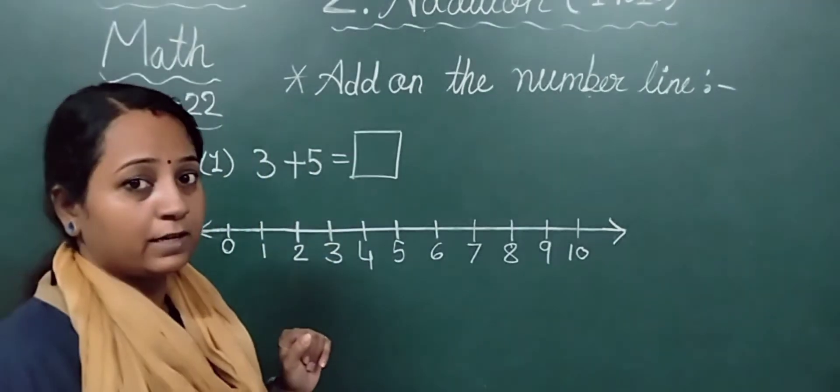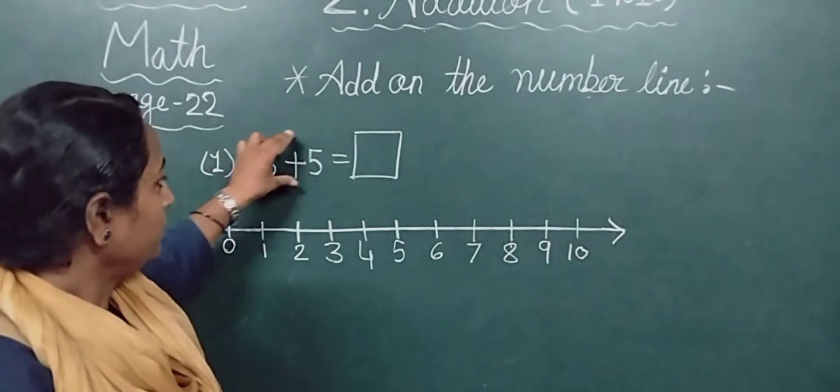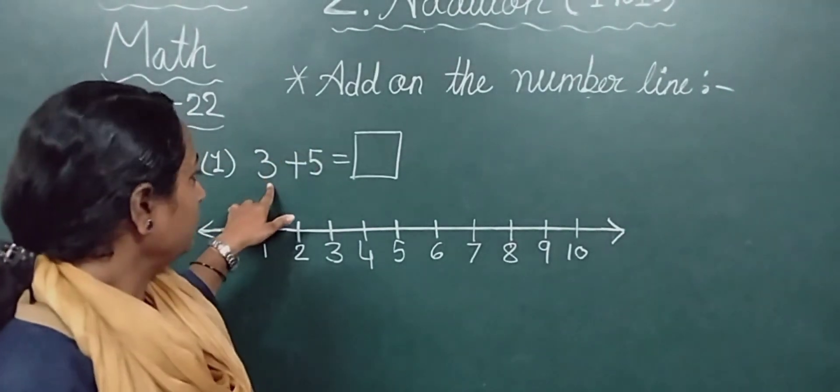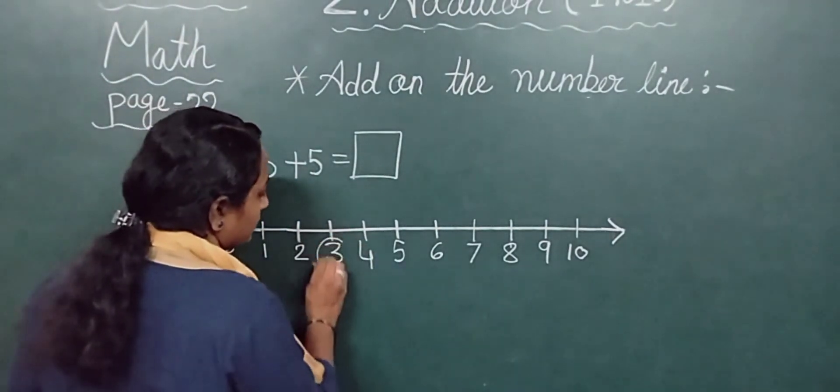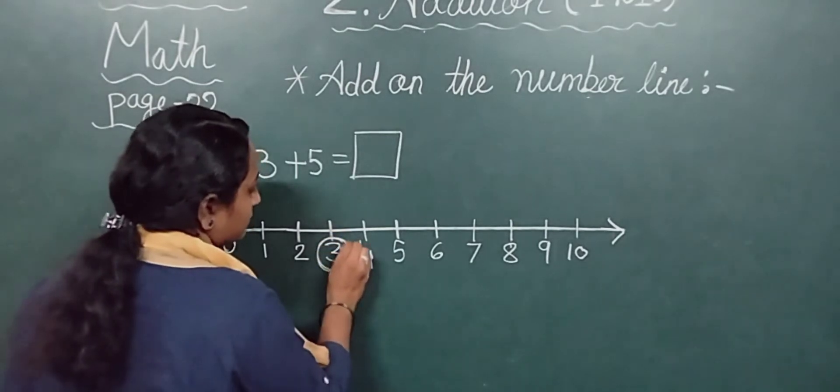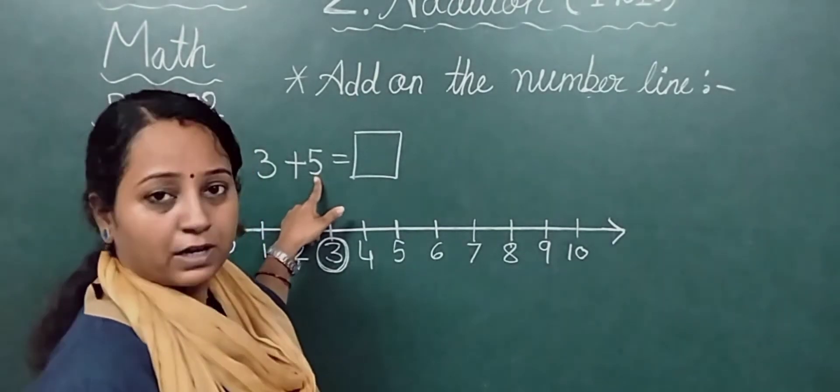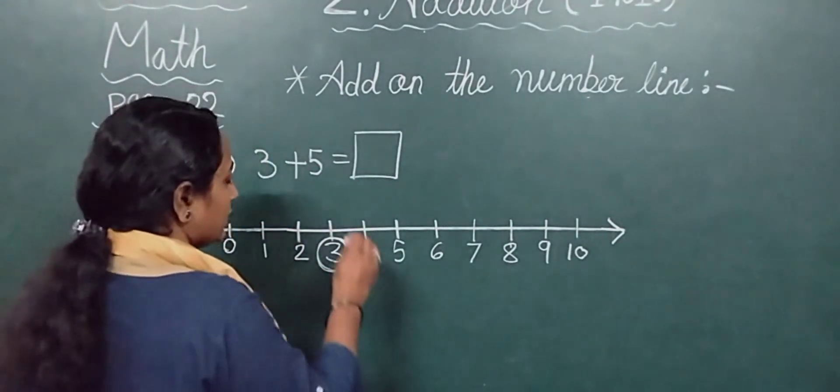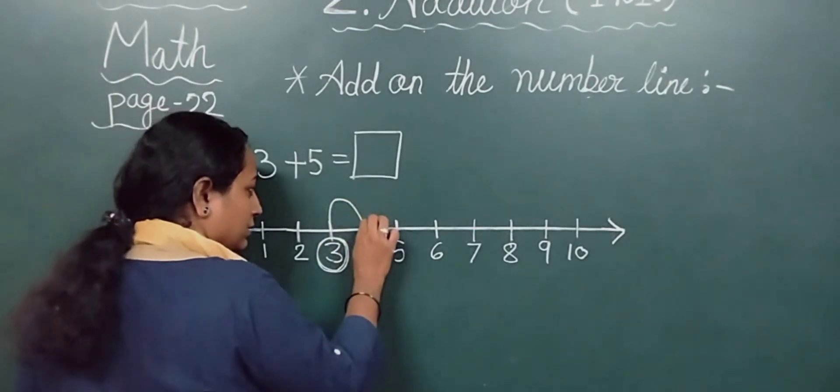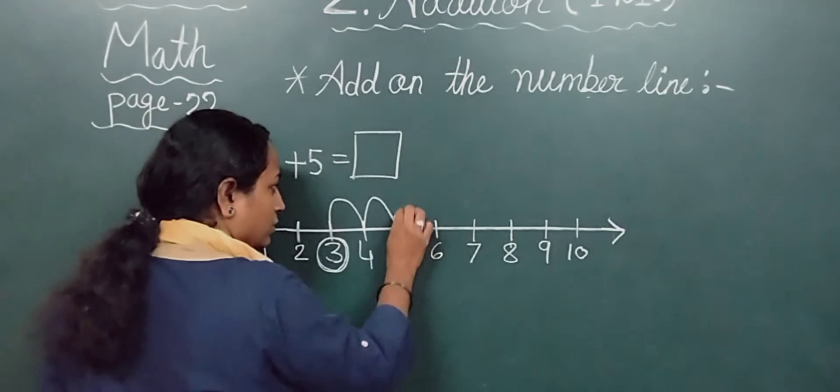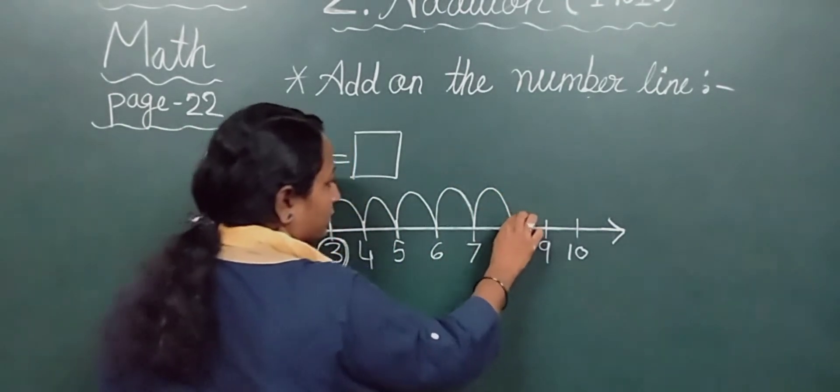Now how will we work on the number line? See here: 3 plus 5. The first number is 3. So we have to find 3 here. Circle here. Now we have to start from 3. Plus 5 means we have to skip 5 times from here. So start from 3, and then 1, 2, 3, 4, 5. We have to start from 3.